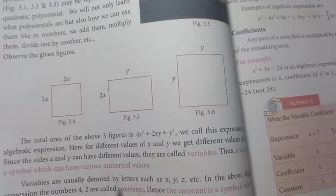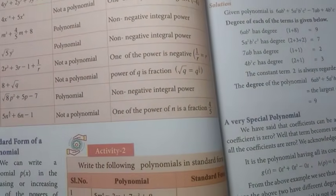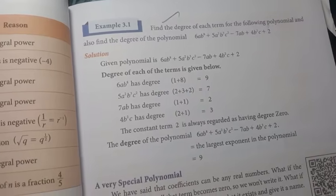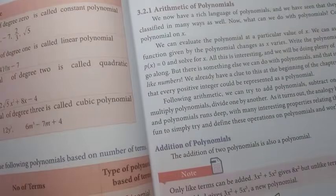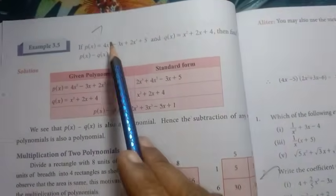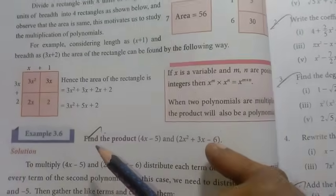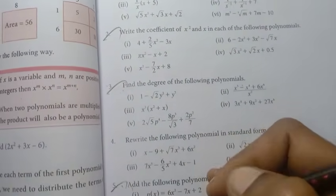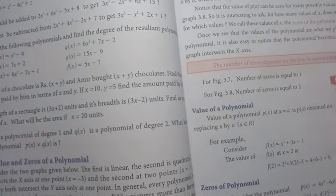Chapter 3: Algebra. Page number 83 — Example 3.1 important, then Example 3.4, Example 3.5, and Example 3.6. Exercise 3.1: 2nd, 3rd, 5th, and 6th.